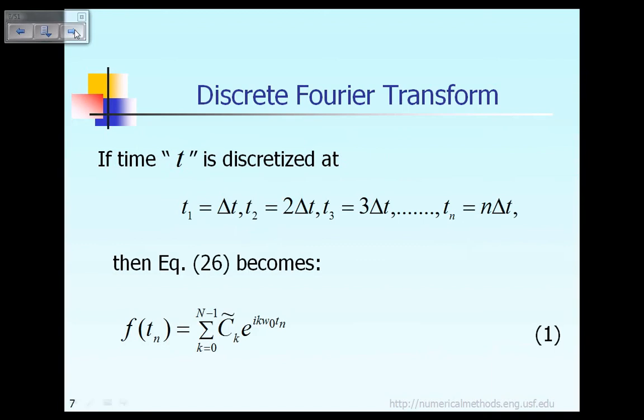Now suppose the time t is discretized at some specific location. So for example time t is equal to t1, let's say t1 equal to delta t. Delta t is the defined value by the user. And let's say t2 is defined as 2 times delta t. Similarly t3 we define as 3 delta t. So based on that we can say in general t sub n is equal to n times delta t. So if you discretize the time t according to that manner then equation 26 will be modified as shown in equation 1.